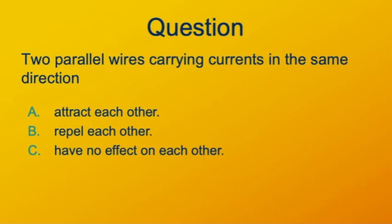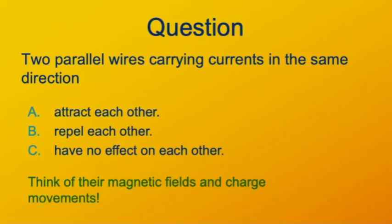Now I have a question for you. If we have two wires that are parallel and carrying currents in the same direction, how are they going to affect each other? It turns out they are going to have an effect on each other. One wire creates a magnetic field, and a magnetic field exerts a force on a current in a wire, unless that current happens to be along the direction of the magnetic field. A single wire has a magnetic field that's tangentially around it, always perpendicular to the direction that the current flows. So the magnetic field created by the first wire will not be parallel to the current in the second wire.